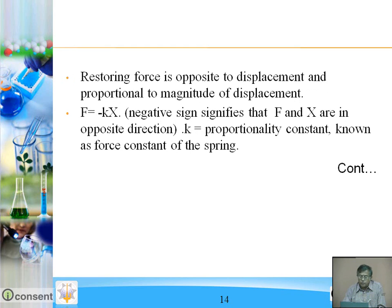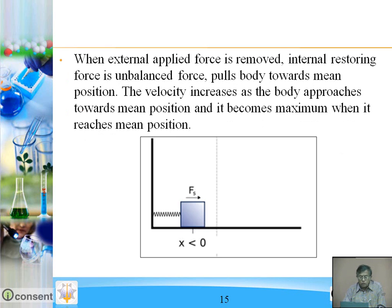The restoring force is opposite to the displacement and proportional to the magnitude of displacement. So F is proportional to x, meaning in equation form F equals minus kx. This negative sign indicates that force and displacement x are in opposite directions. The constant k is a proportionality constant known as the force constant of the spring, which depends upon the material and elastic property of the spring.